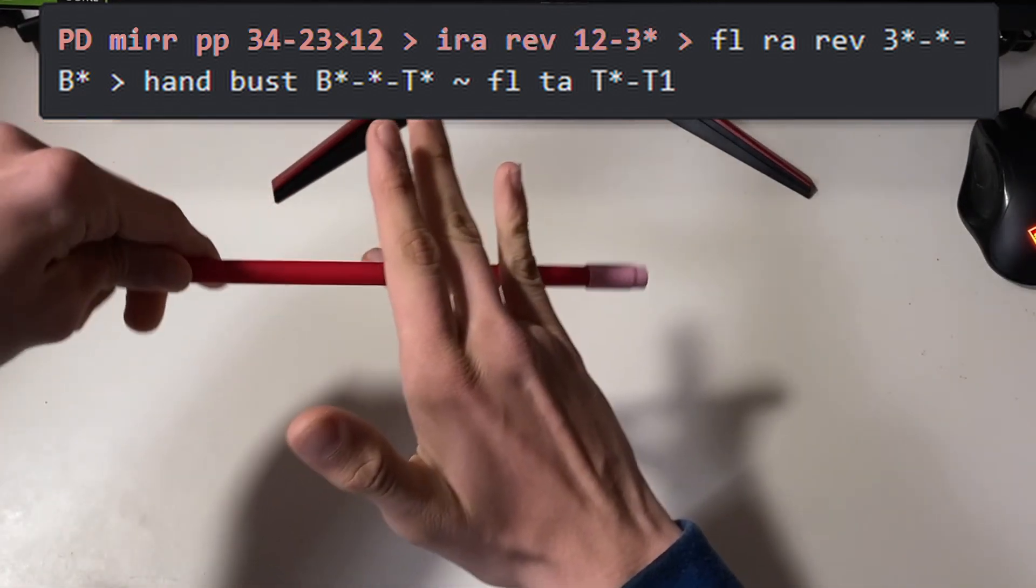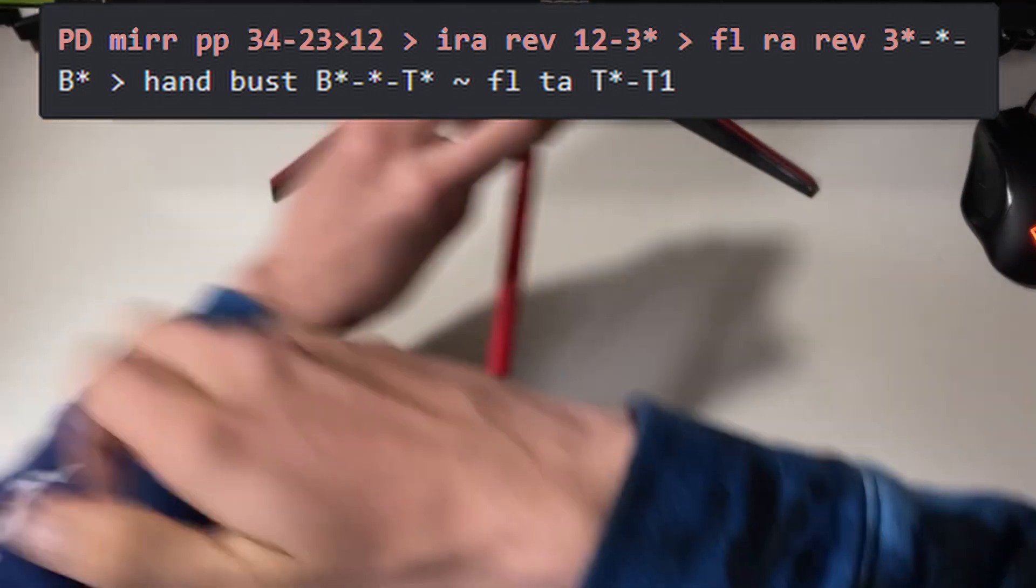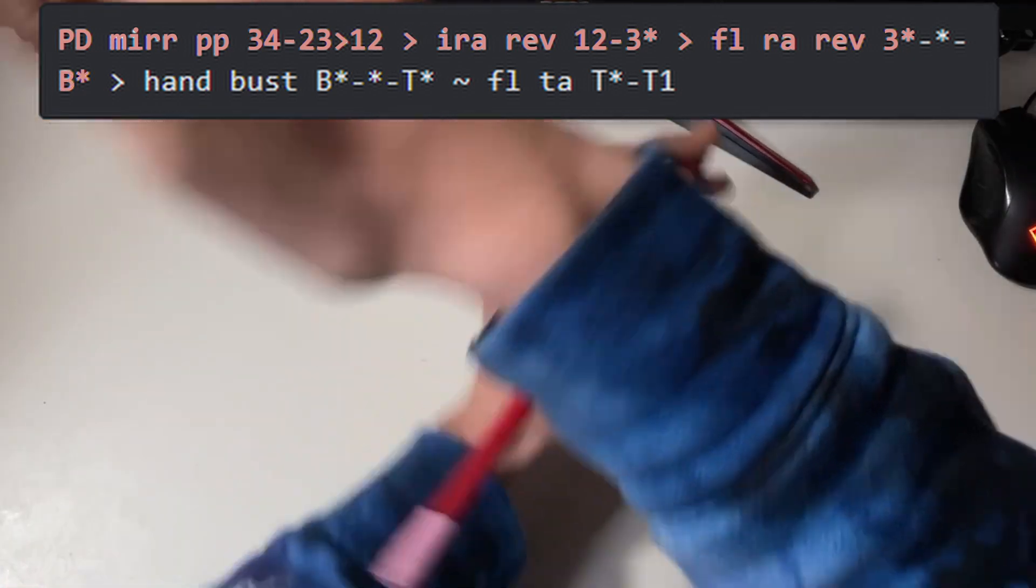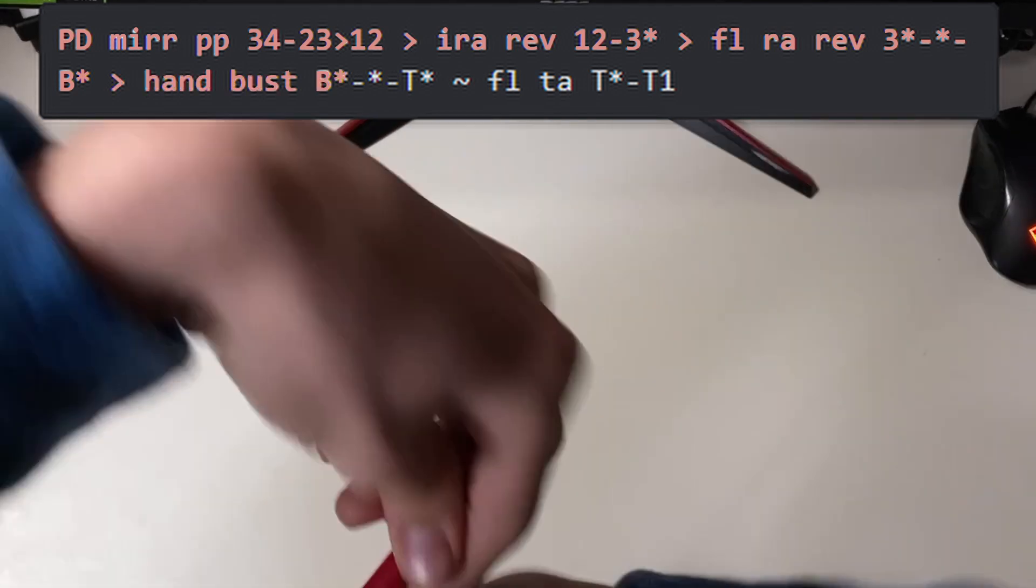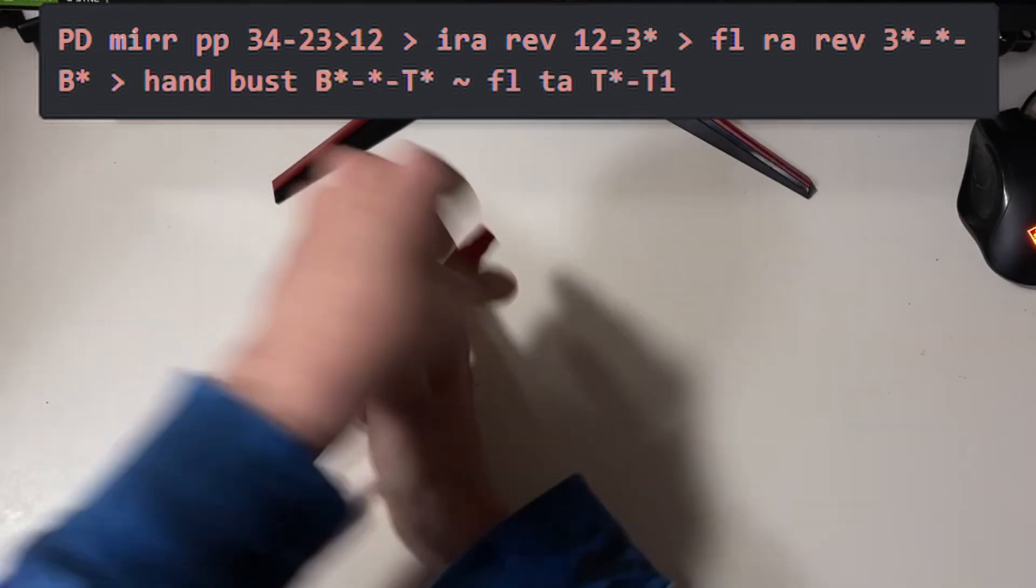After that, the motion continues to a fingerless ring around reverse to between the back of the hand and the air after being in solely the air. The linkage transitions to a hand bust to air, then finishes with a fingerless thumb around.